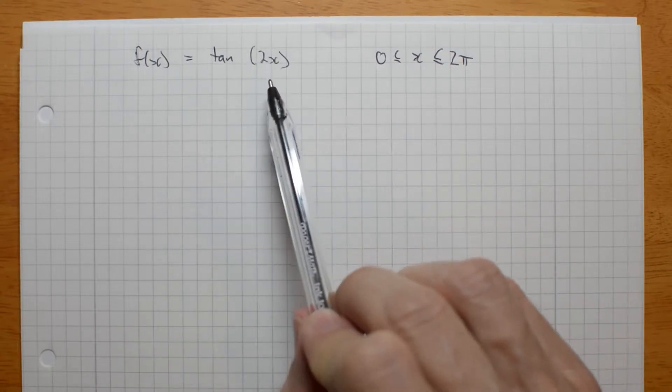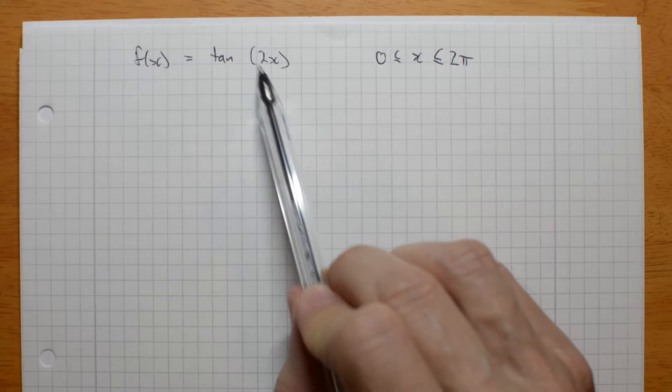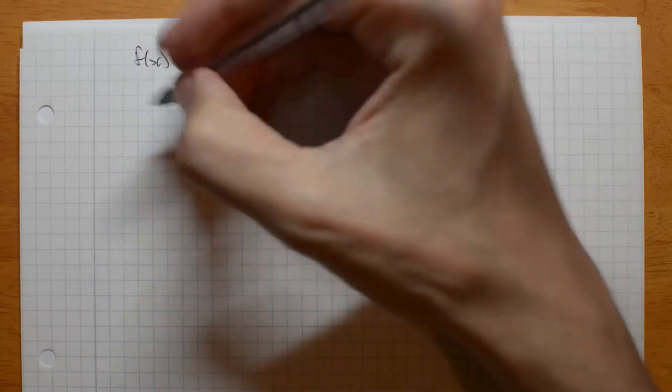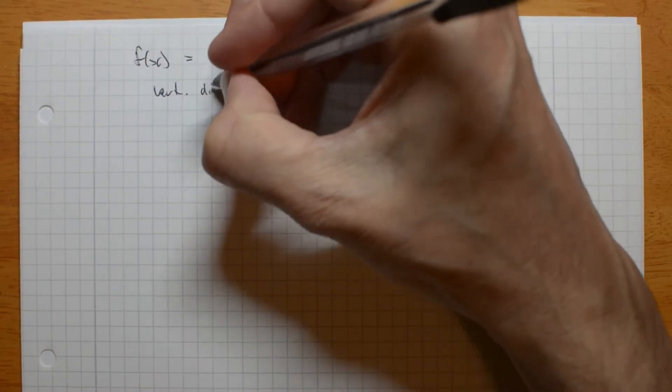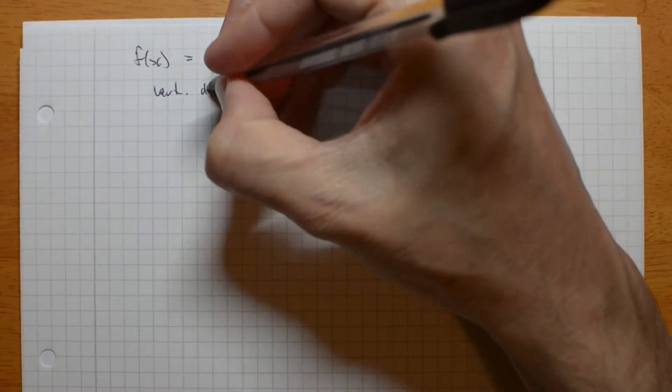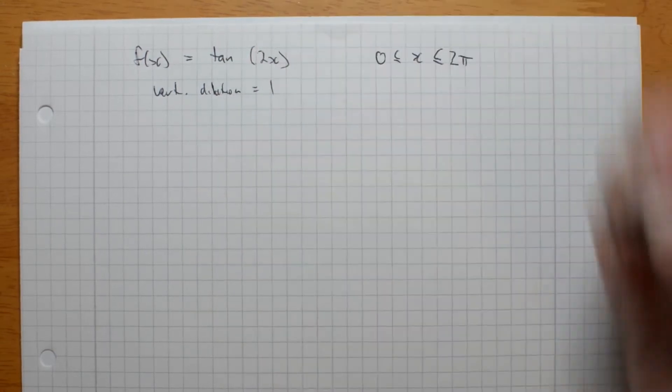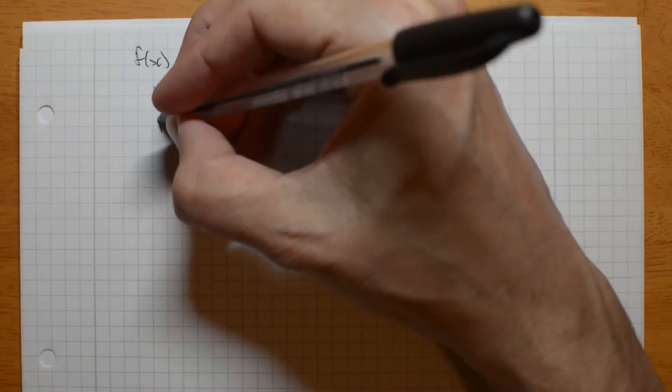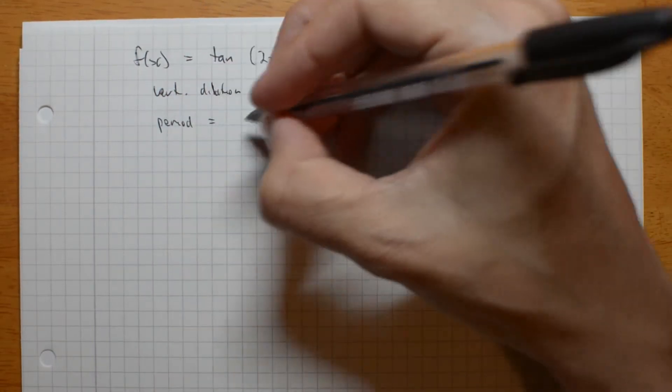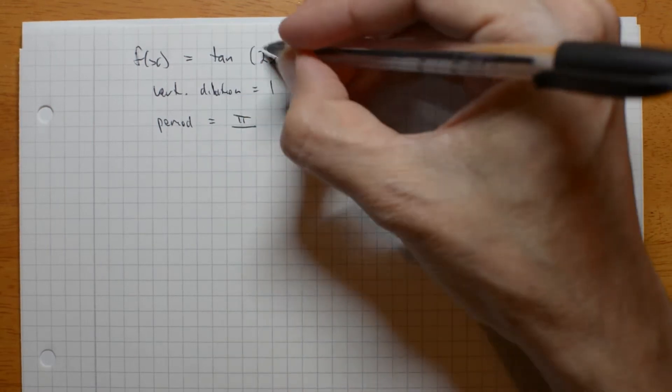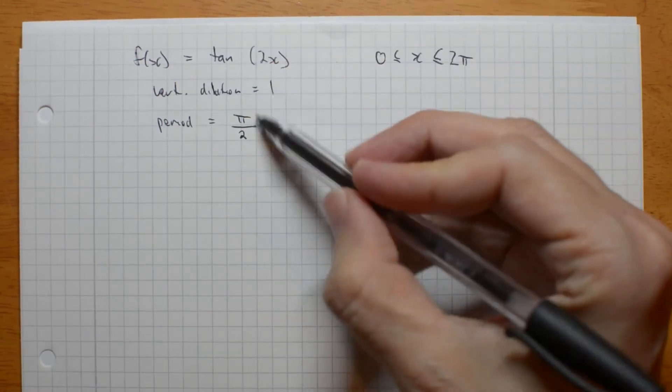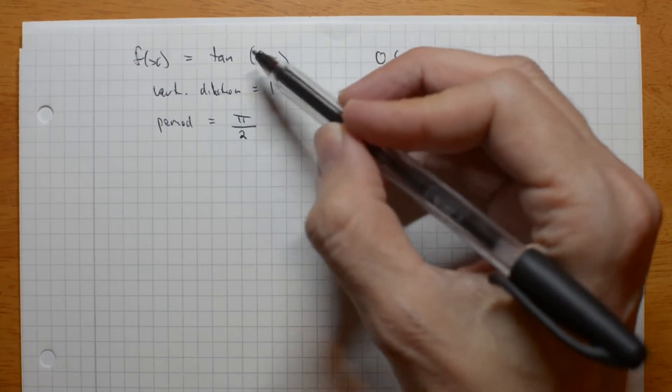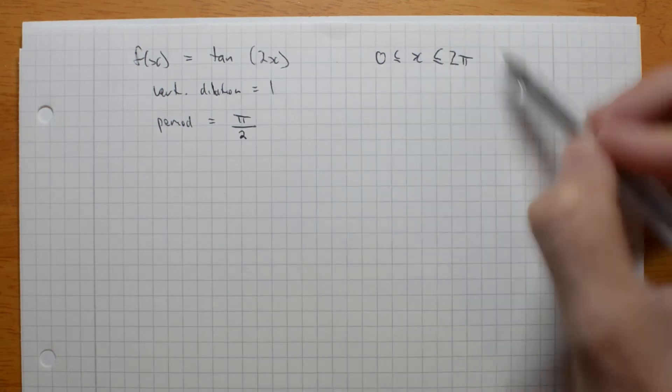So, for this graph, the period, instead of being 2 pi over this number, is actually going to be pi over this number. So, let me go, vertical dilation is 1. There's no change. It's not inverted or anything like that. But, the period is going to be pi over this number, 2. I've got half the period, which means I'm going to have twice as many of the tan repeats within this range.